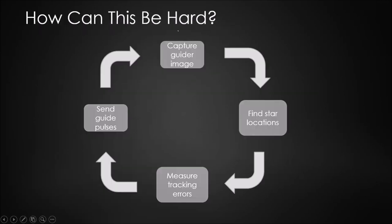We've now made a full circuit around the guiding process and talked about how each of the four steps is implemented. As long as you're guiding on a target, the guiding software keeps marching around this loop, repeating these four steps over and over, separated by the guide exposure length — typically one or two seconds. At this level, it doesn't really look like rocket science; it's not conceptually very difficult. But of course, as usual, the devil's in the details.